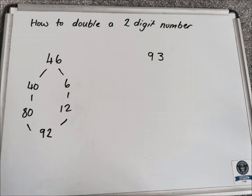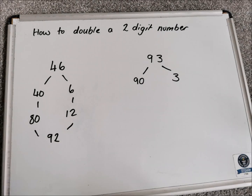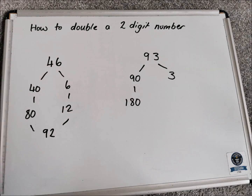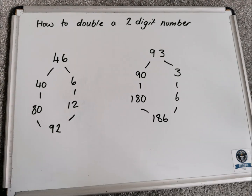Let's have a look at another example. This time we have 93 as our two-digit number. We partition the 9 and the 3 to get 90 and 3. If we know double 9, we can work out double 90. Double 9 is 18, so double 90 is 180. Doubling 3 gives us 6. Then we bring together 180 and 6 to get 186.